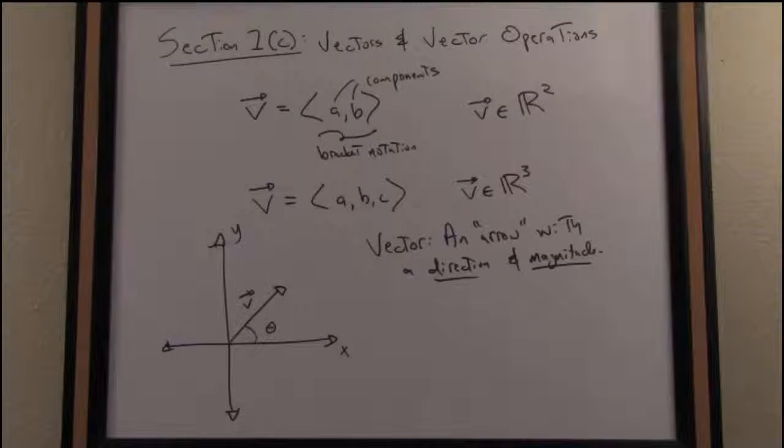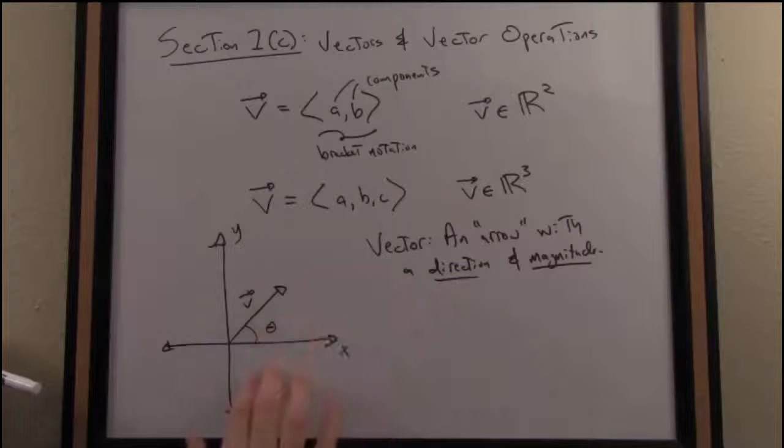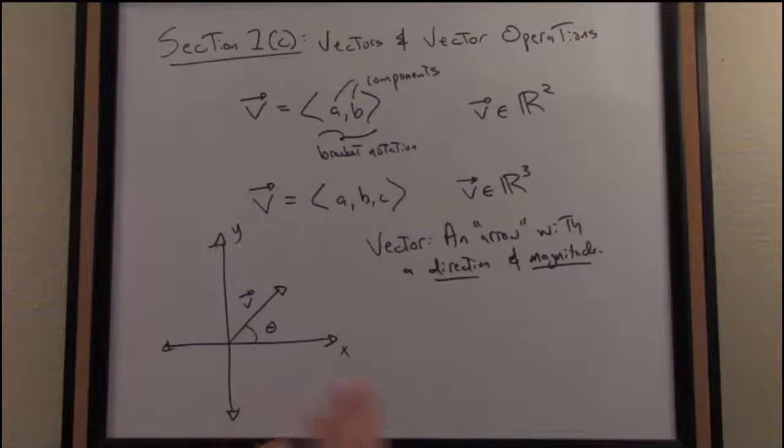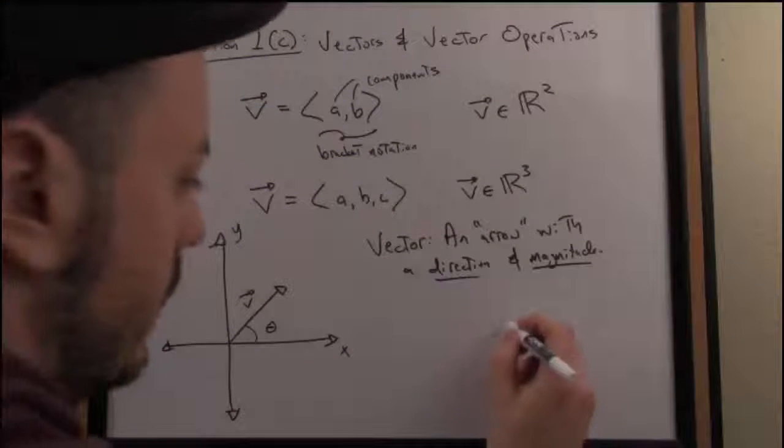So there we have the algebraic notion of a vector. We can write it in bracket notation by simply listing the components in order of that vector. We can also realize a vector in a geometric sense as an arrow in a plane or in 3-space. I can also draw that as well with a direction and a magnitude.